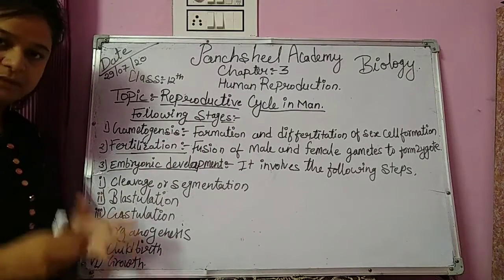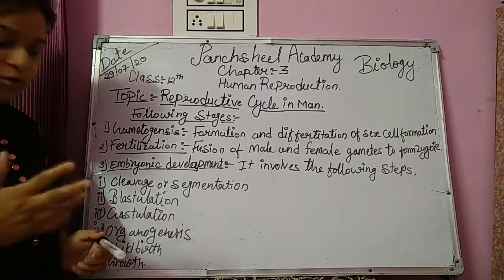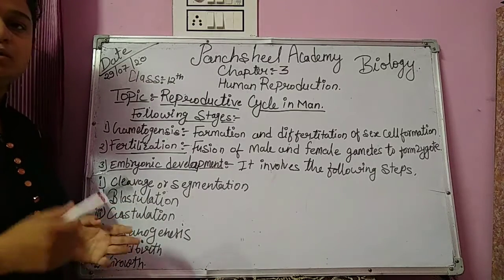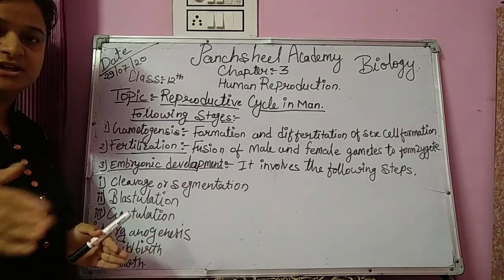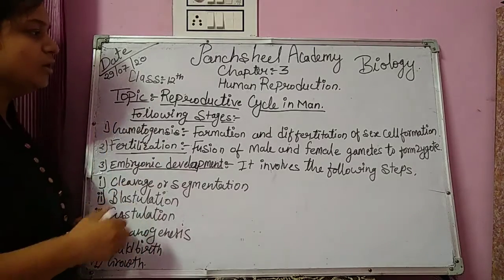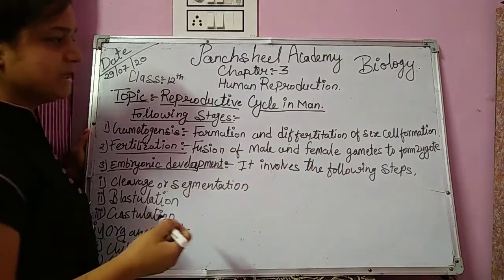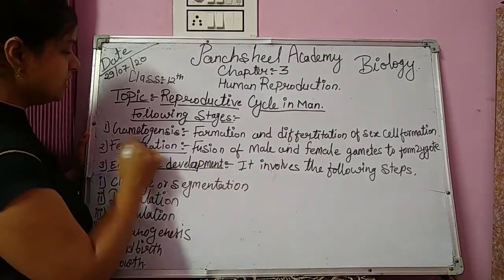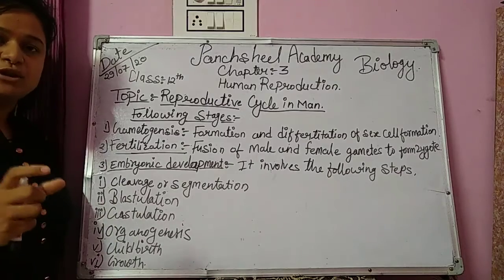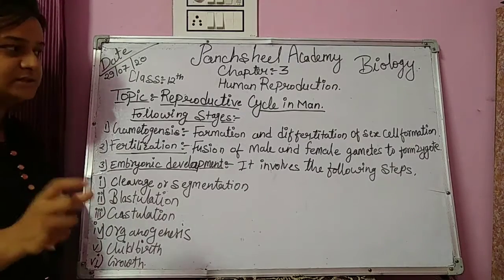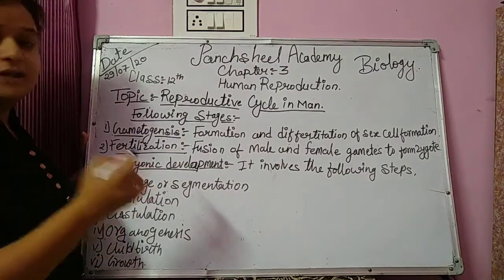Generally, when we talk about a male, males are the most advanced creatures on earth. The mode of reproduction in males is similar to that found in other mammals, but there are various stages divided into the reproductive cycle. The first stage is gametogenesis — the formation and differentiation of sex cells.